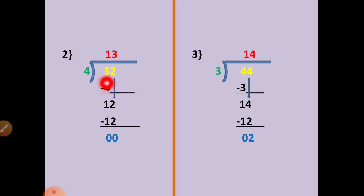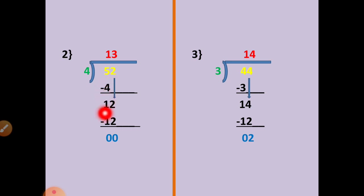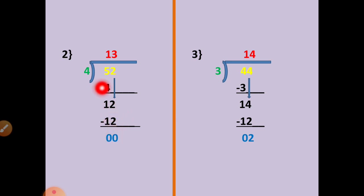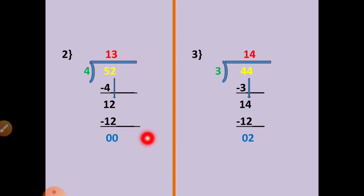Question number 2: 52 divided by 4. First we will take the first number, that is 5. 4 ones are 4. 5 minus 4 equals 1. Write the next number down. Now this number is 12. 4 threes are 12. Minus: 2 minus 2 is 0, 1 minus 1 is 0. Here you will write the answer. This number is the divisor; here you will write dividend; here you will write quotient; and here you will write remainder.